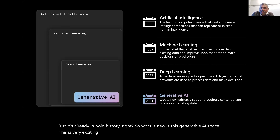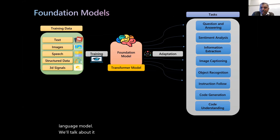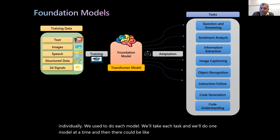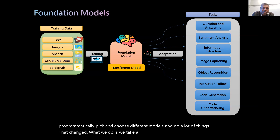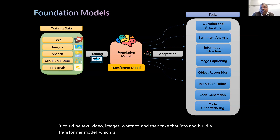Generative AI is very exciting because we used to build a per-task, per-model type thing. But now the model is becoming very creative in creating content — it's a language model. What has changed is we take a large volume of corpus — it could be text, video, images — and build a transformer model called the foundation model, which can do multiple tasks from just one model.